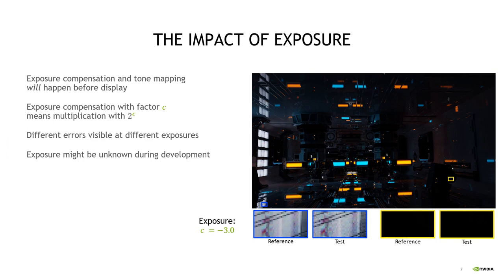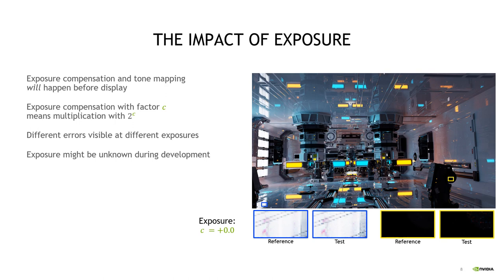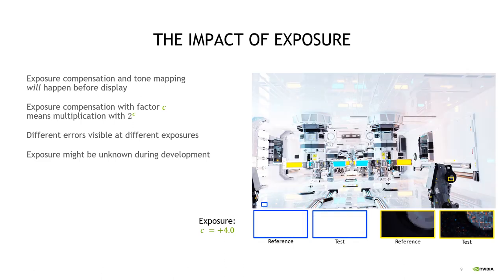Here we want to compare a high quality reference image to a lower quality test image. We use an approximation of the ASUS tone mapper and an exposure compensation factor of minus three. We can see some noise in the blue inset in the bottom left, but in the yellow region the reference and test look identical. We've now increased the exposure to zero — the situation is similar, with noise visible in the blue inset but not in the yellow. However, the noise in the blue inset is perceived differently at this longer exposure. At plus four exposure, we can no longer see any error in the blue inset, but we see large errors in the yellow one. So different errors are seen depending on the exposure compensation applied to the HDR image before displaying it.